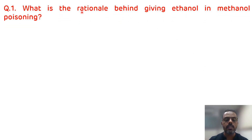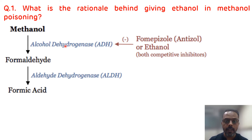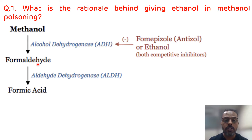The first question is: what is the rationale behind giving ethanol in methanol poisoning? Methanol is a toxic alcohol. It is metabolized via the alcohol dehydrogenase enzyme and gets converted to formaldehyde. Formaldehyde is a toxic compound which can damage the retinal cells, resulting in blindness as well as respiratory difficulties, as seen in this patient who had diminished vision and difficulty in breathing. Formaldehyde is then converted to formic acid via aldehyde dehydrogenase enzyme.